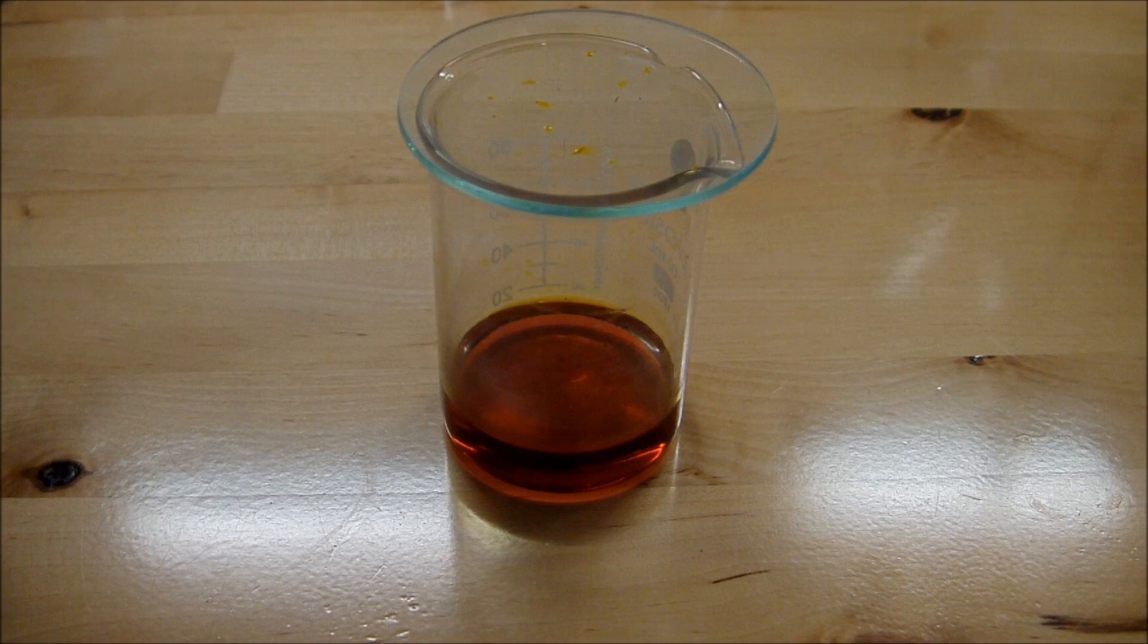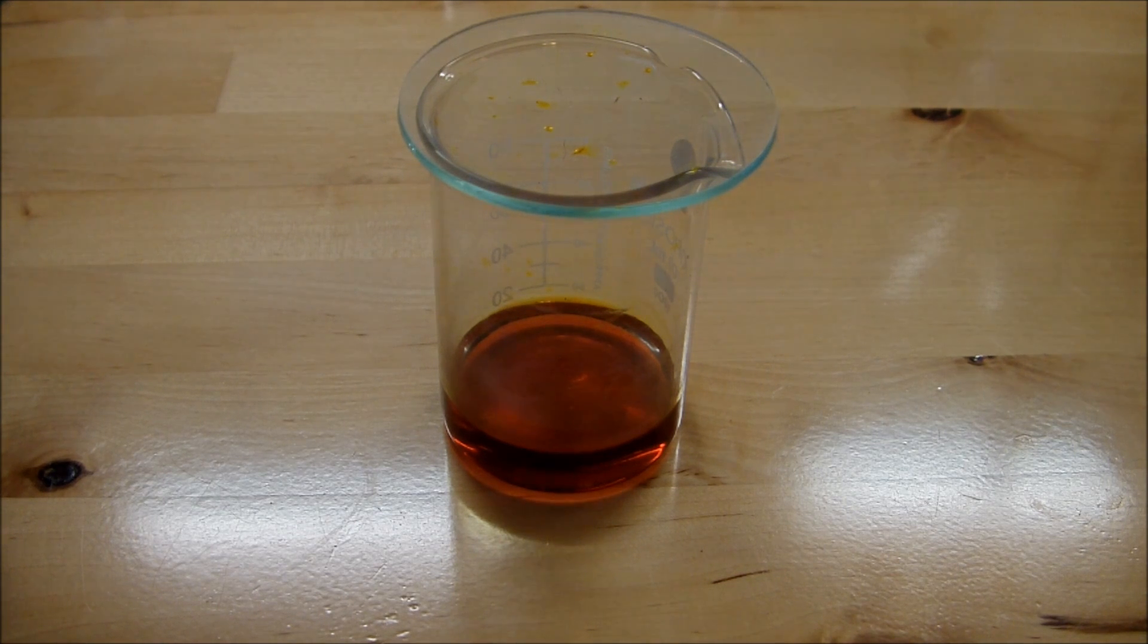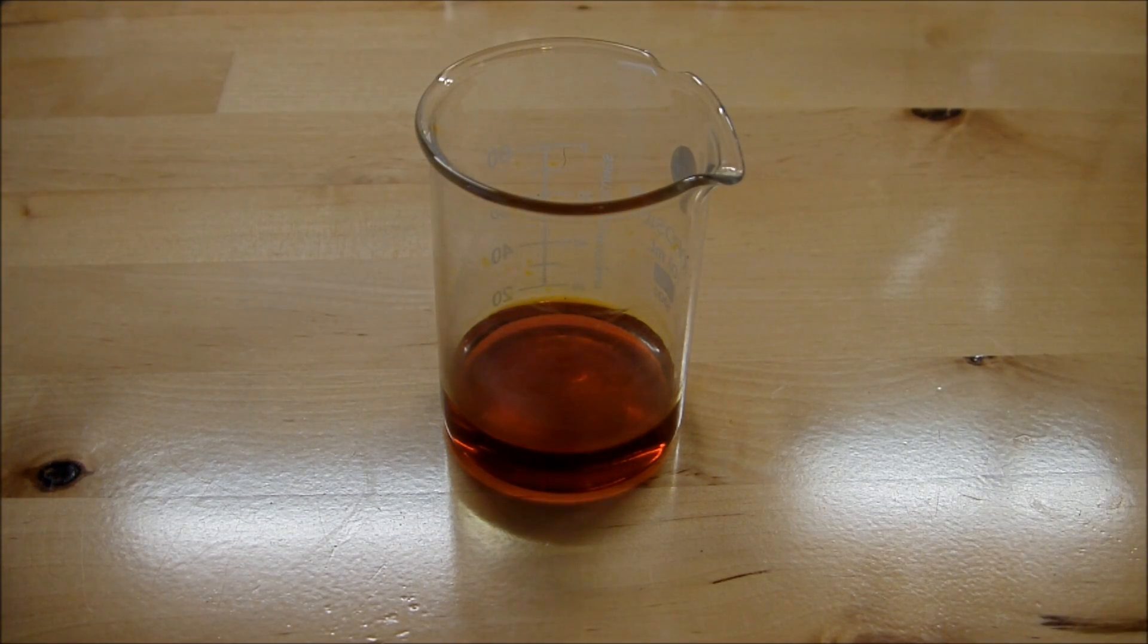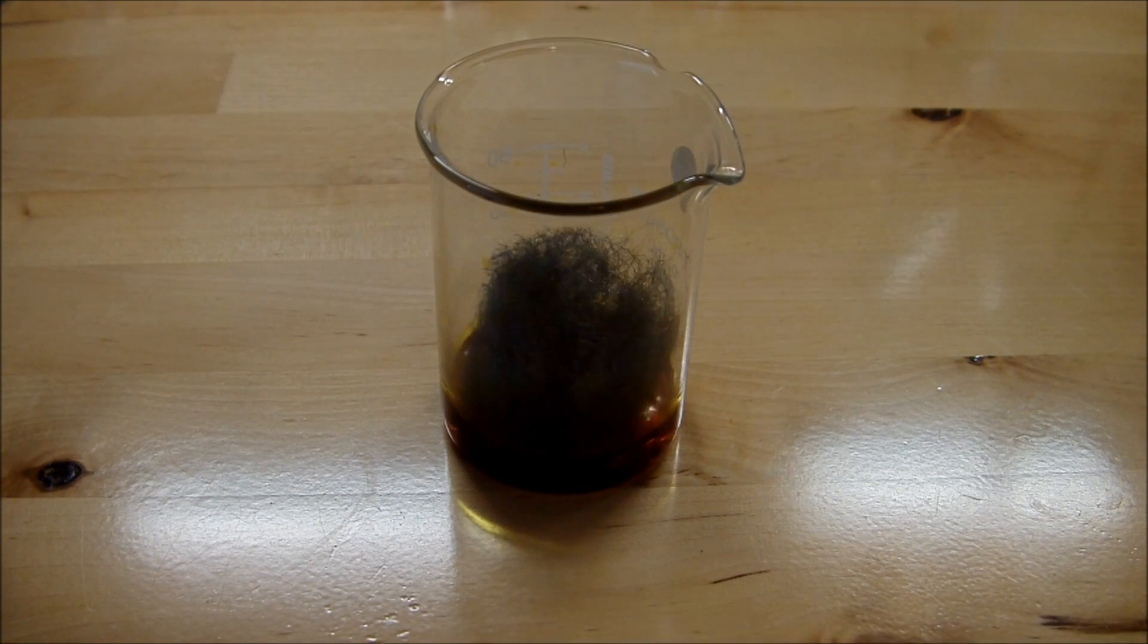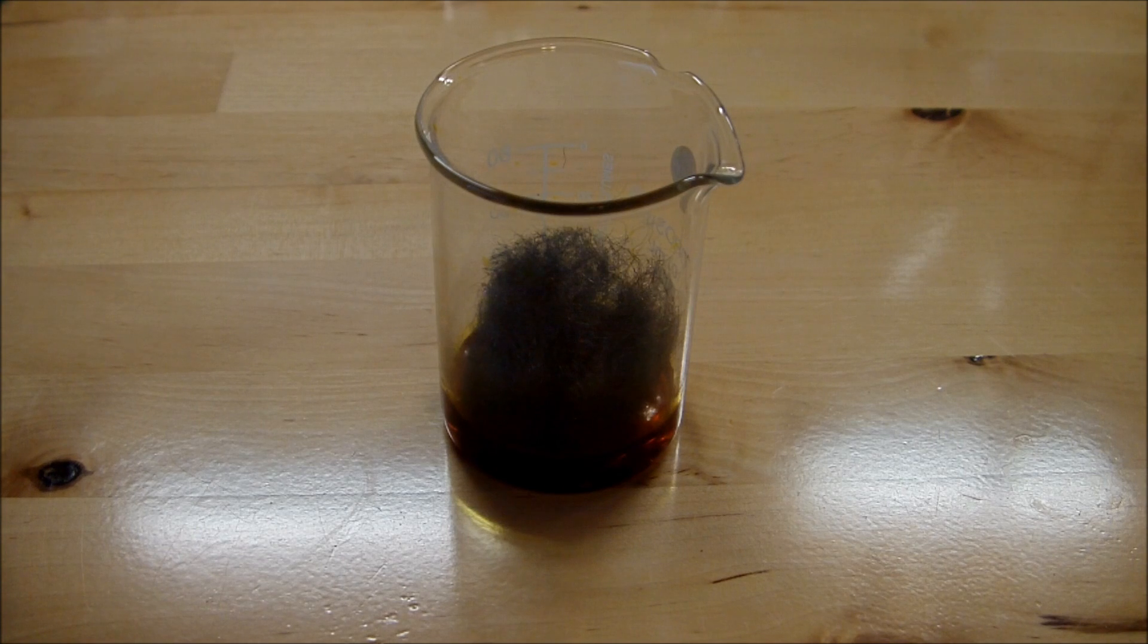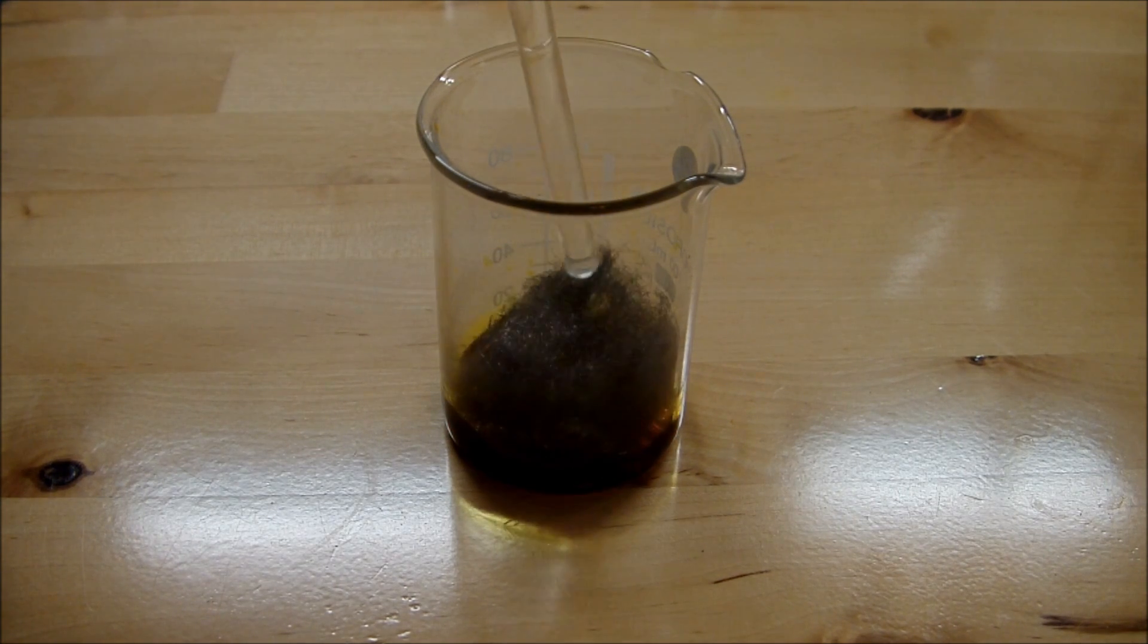Now, if you want to regenerate the iron 2 chloride from the iron 3, you can simply add some more iron wool to it, and that will react to convert it back to the iron 2.